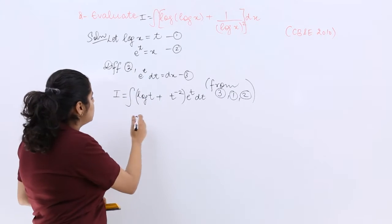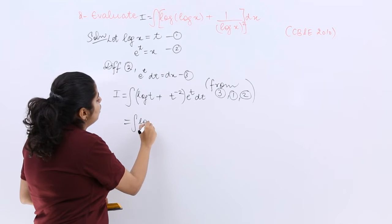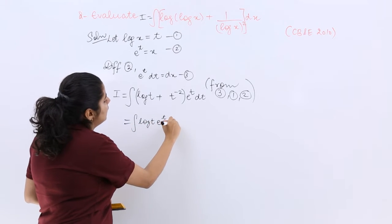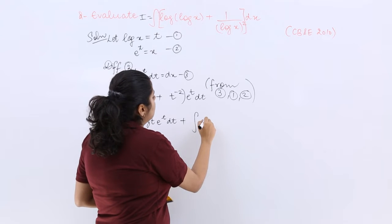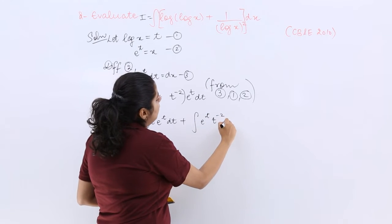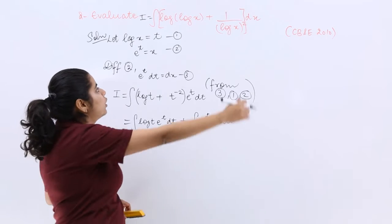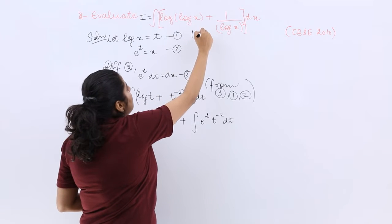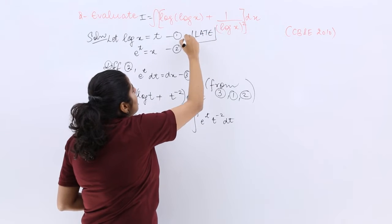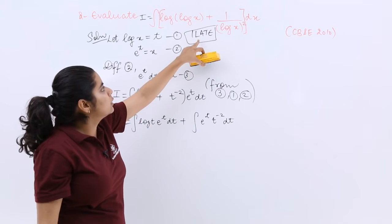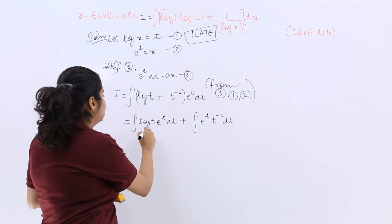Now let me separate the integral. It is log t e raised to the power t dt plus integral e raised to the power t times t raised to the power minus 2 dt. Now you know that in such kind of equations what do we use? We use ILATE, right?